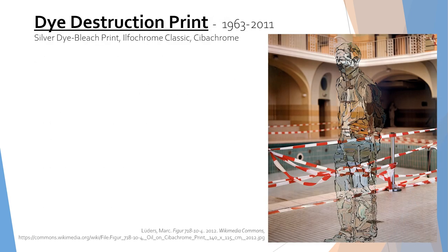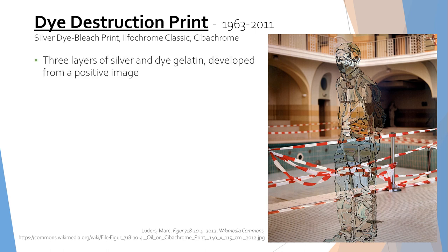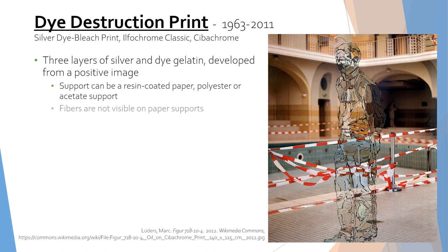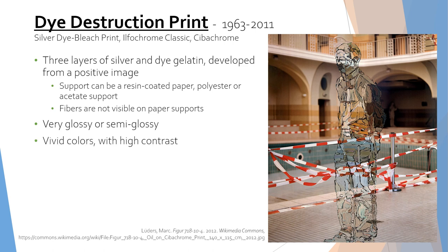Dye destruction prints were created from 1963 to 2011. Similar to chromogenic color prints, dye destruction prints are made from three layers of silver and dyed gelatin. However, these are developed from a positive image. The support can either be a resin-coated paper, a polyester, or an acetate support. The paper fibers are not visible on the resin-coated paper, and the surface can range from glossy to semi-glossy. They have vivid colors with high contrast and commonly have black borders. These were very popular for fine art prints.